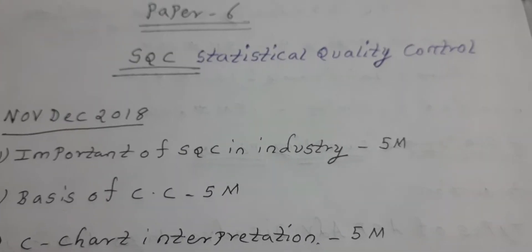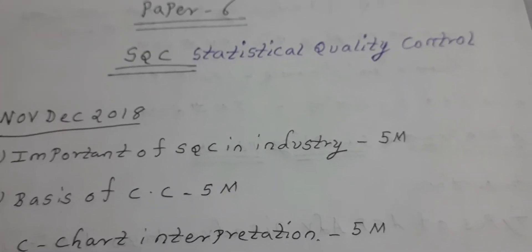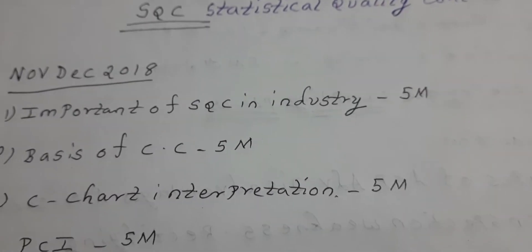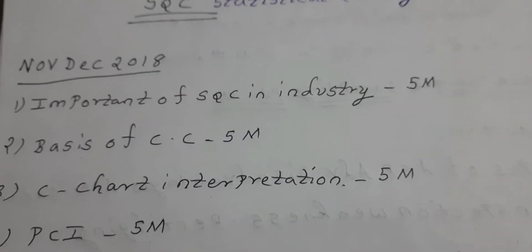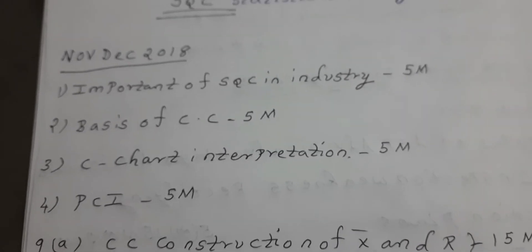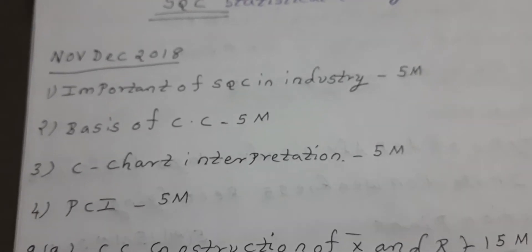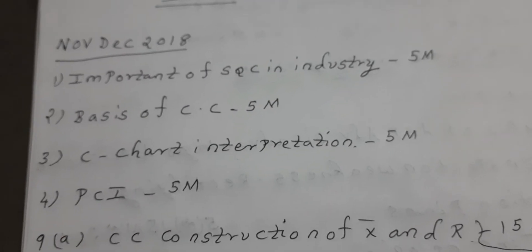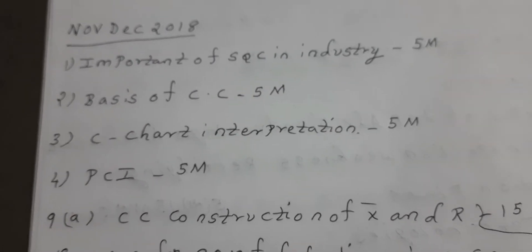First one is Statistical Quality Control. Here, November/December 2018, 2019, 2020 — three question papers. I will choose questions on the Importance of SQC in industry. First one is 5 marks, 3 questions.